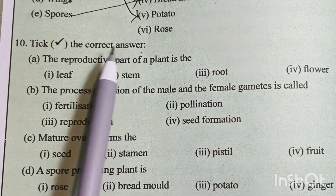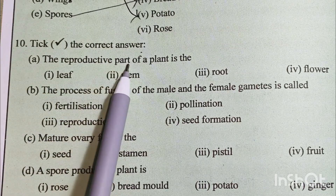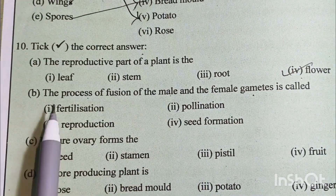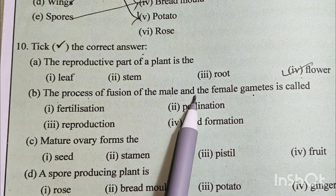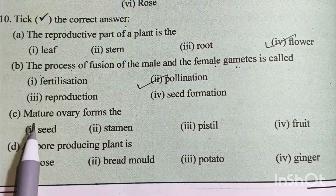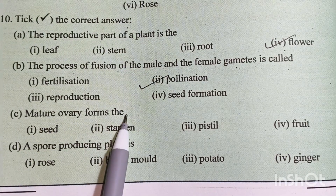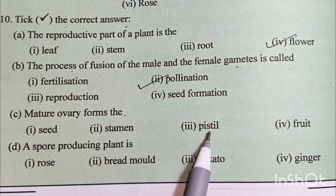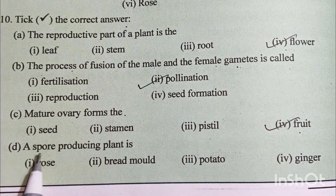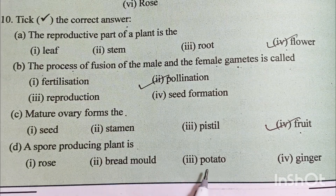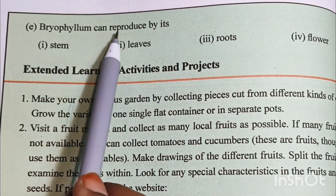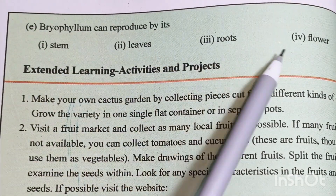Tick the correct answer. A: The reproductive part of a plant is the flower. B: The process of fusion of male and female gametes is called fertilization. C: The mature ovary forms the fruit. D: The spore-producing plant is bread mold. E: Bryophyllum can be reproduced by its leaves.